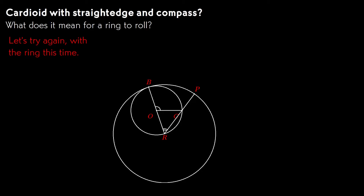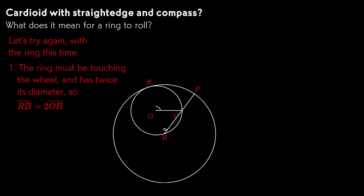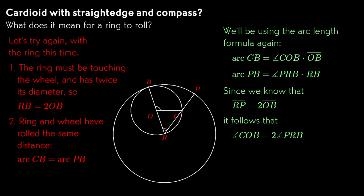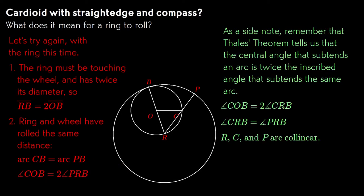We'll see the same thing with the rolling ring. The ring has to be touching the wheel, which sets up one line with equal segments. And the ring and the wheel have to have rolled the same distance, which gives us another pair of equal arcs. Again, using the arc length formula, we find the central angle on the ring has to be half the central angle on the stationary wheel. And Thales' theorem tells us that an inscribed angle is half the central angle, so the points p, c, and r in the diagram have to lie on the same line.